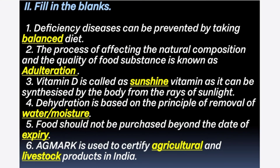2nd section: Fill in the blanks. 1st question: Deficiency diseases can be prevented by taking a — diet. Answer is Balanced diet. Balanced diet means the diet contains all the nutrients in correct proportion. 2nd question: The process of affecting the natural composition and quality of food substances is known as — Answer is adulteration.